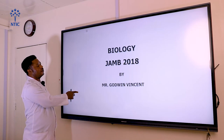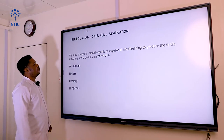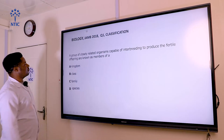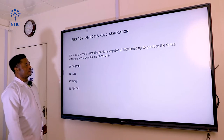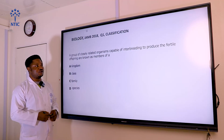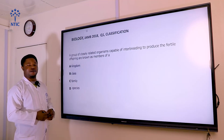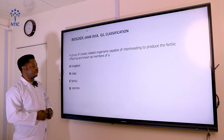I expect you to get your pencil and your jotter so that you could jot down the answers to these questions. Question one says: a group of closely related organisms capable of interbreeding to produce a fertile offspring are known as members of...